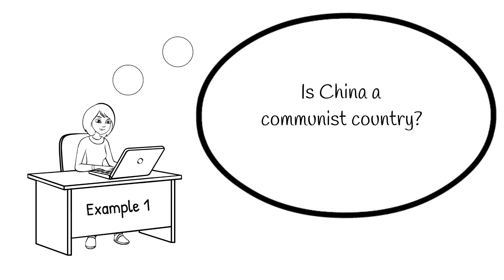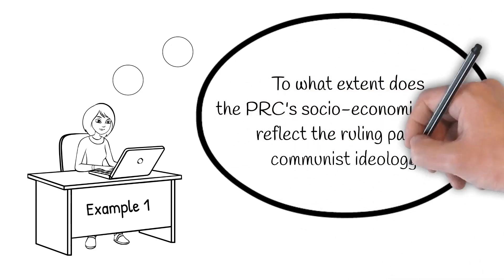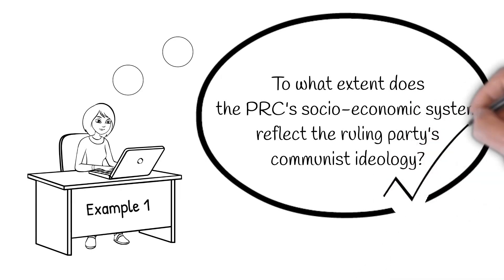How can we start turning this into a more manageable question? How about rephrasing it like this: 'To what extent does the PRC's socio-economic system reflect the ruling party's communist ideology?' This way we're not talking about real existing communism, but rather about the ambitions of the Chinese Communist Party, which we can study through clearly defined materials like its constitution or its propaganda. We also have a better sense of where to explore the policies that have come out of that ideology — in Chinese society and its economy. We'd still need to narrow down elements and say more about our practical approach, but this provides a much better starting point.